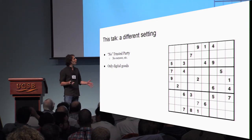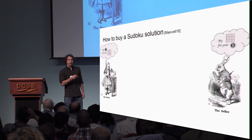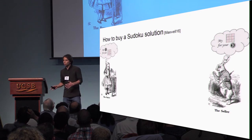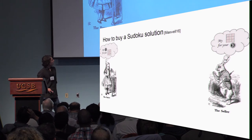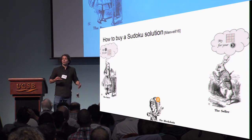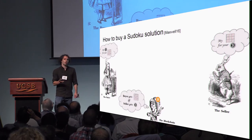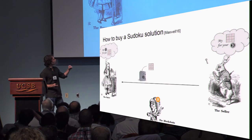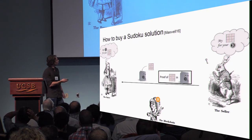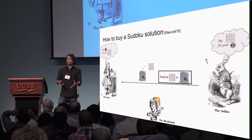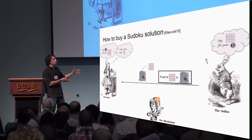So let's start from: how do you buy a Sudoku solution with Bitcoin in a fair manner? There is an official solution, sort of, from the Bitcoin community that was presented at Financial Crypto in 2016. It sees this fair exchange problem and uses the blockchain as the trusted party. The seller takes the Sudoku solution, encrypts it, and sends it to you, also proving to you in zero knowledge that the ciphertext actually contains the solution. You're then convinced that what you received contains the Sudoku solution — all you need is the key.